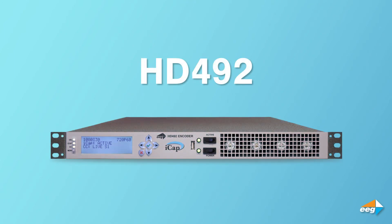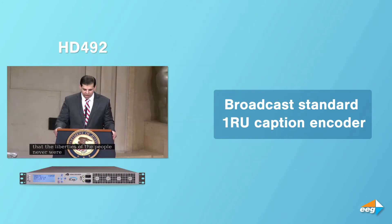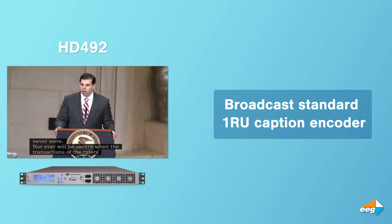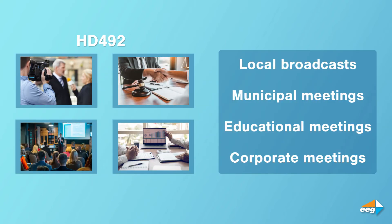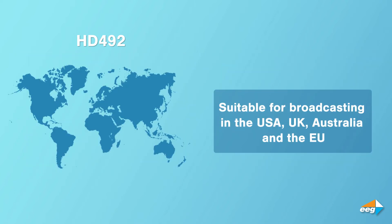HD 492 is EEG's broadcast standard 1RU caption encoder that embeds closed captions into an HD SDI video signal. Used for local broadcasts as well as municipal, educational, or corporate meetings, the HD 492 is suitable for broadcast TV in the USA in CEA 708 standard, or in DVB countries like the UK, Australia, and the EU in OP 47 DVB Teletext standard.